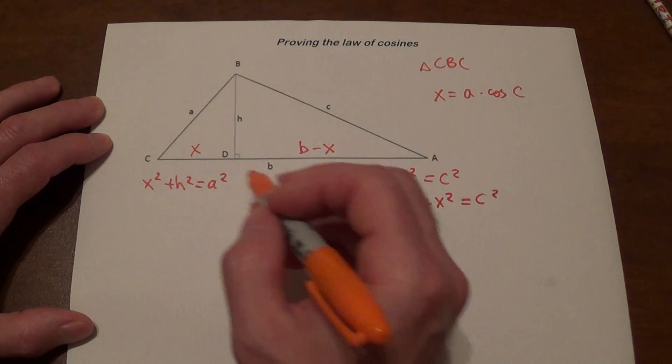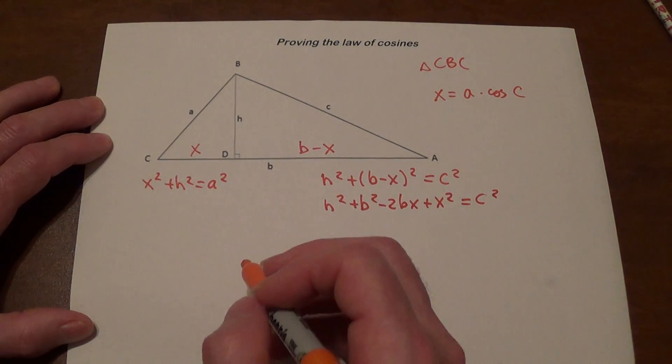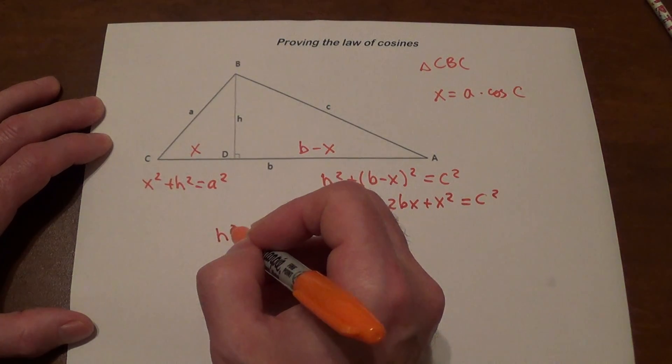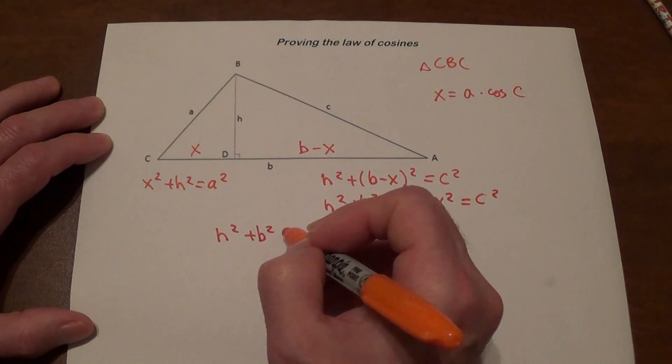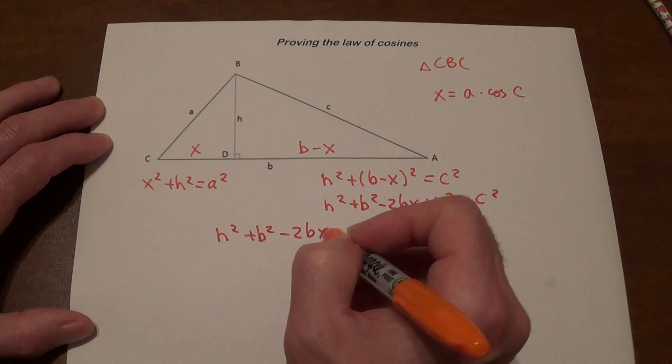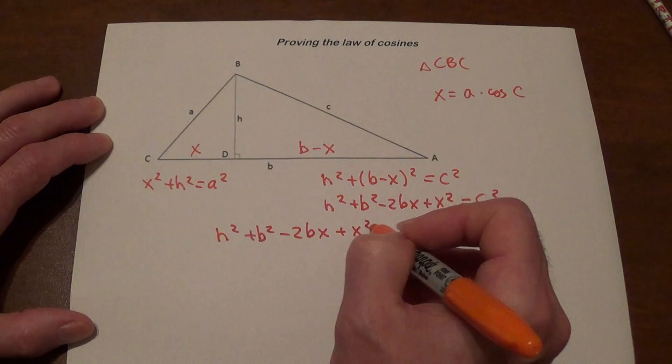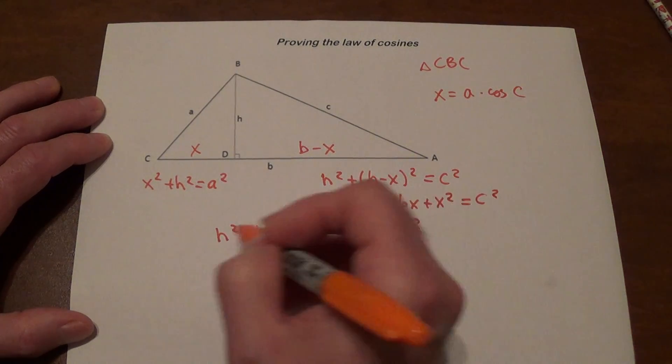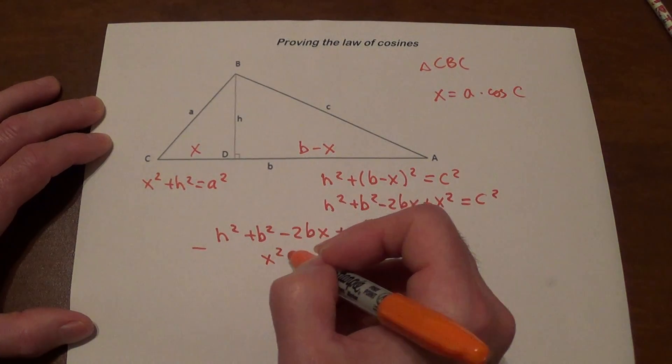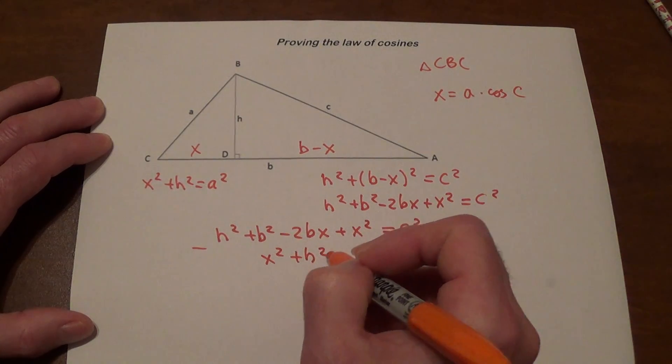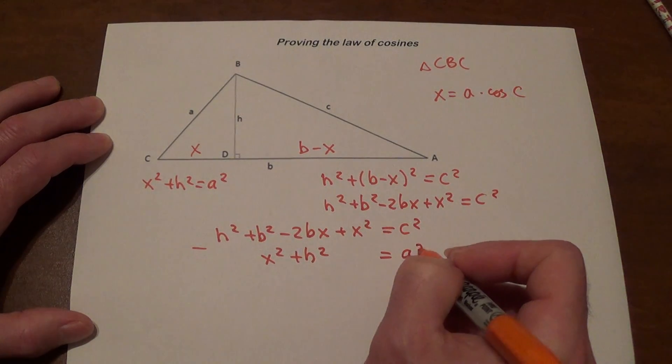And I'm going to take this equation and subtract that equation from it. So h squared plus b squared minus 2bx plus x squared equals c squared minus x squared plus h squared equals a squared.